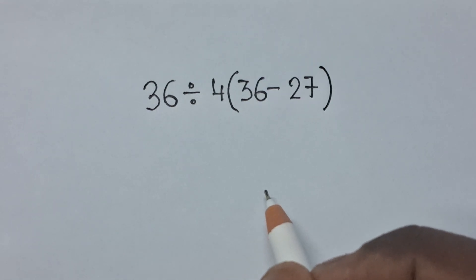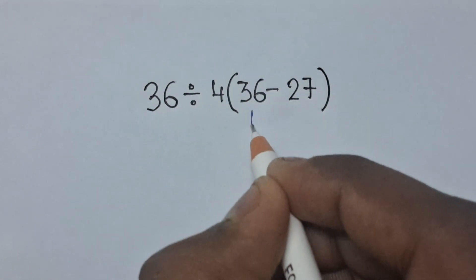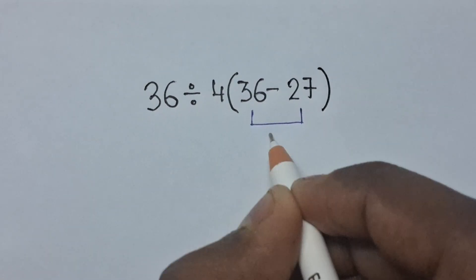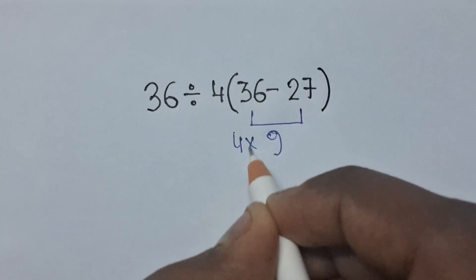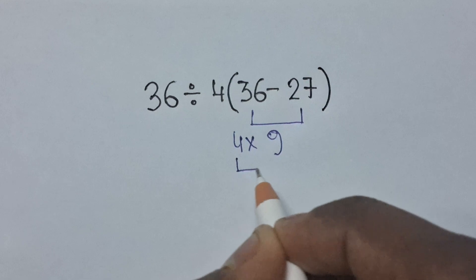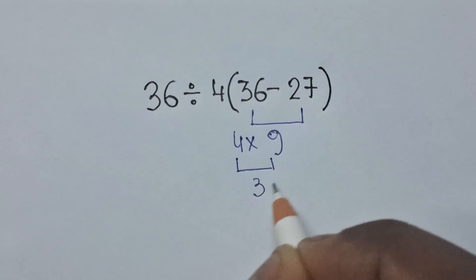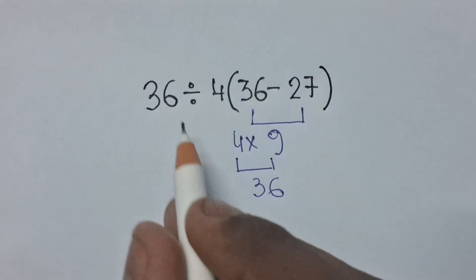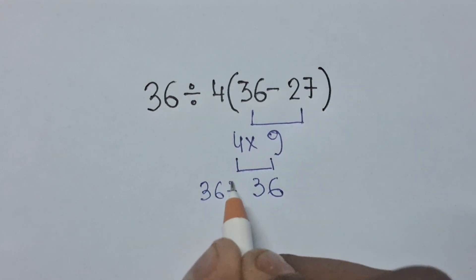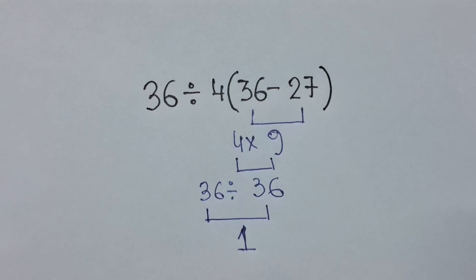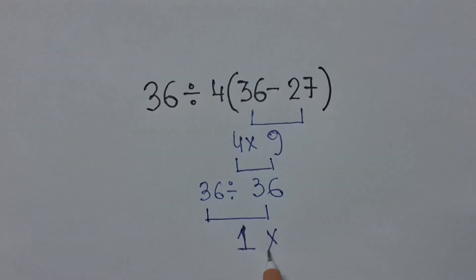Let's solve it. 36 minus 27 is equal to 9. Now 9 multiplied with 4, so 4 times 9 is equal to 36. Finally, the expression becomes 36 divided by 36 which equals 1. But 1 is not the correct answer for the expression.